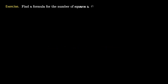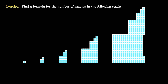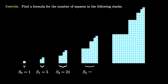Let's start with a problem. Let's try to find a formula for the number of squares in the following stacks of little squares. We build a sequence of the number of squares as 1, 5, 21, 85, and 341.